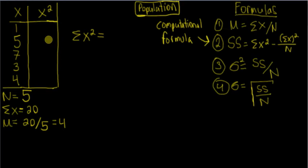Our next order of operations is going to be to fill in this column here. This is x squared. So all we're going to do is square these values and then enter them into their corresponding row. So 1 squared is 1, 5 squared is 25, 7 squared is 49, 3 squared is 9, and 4 squared is 16.